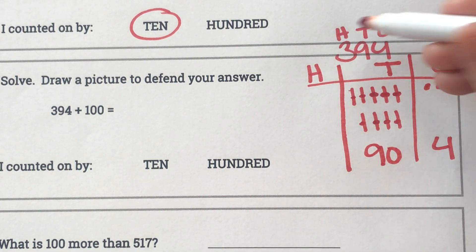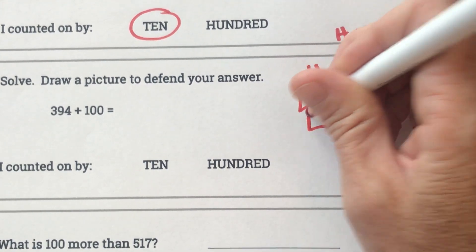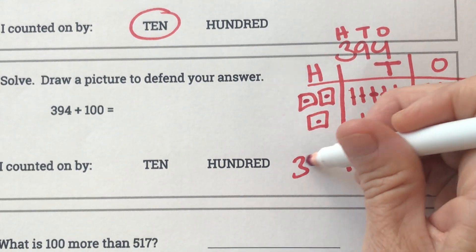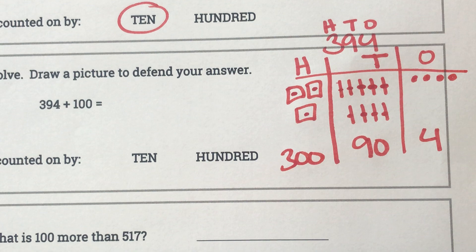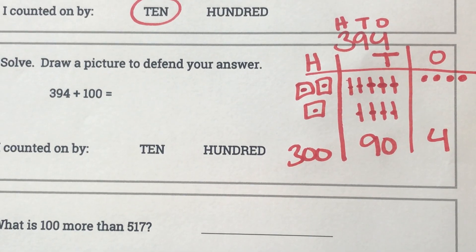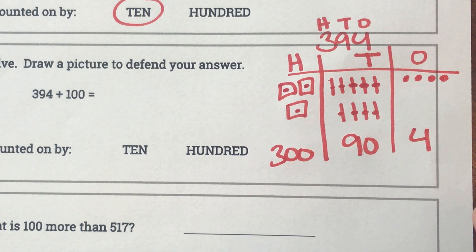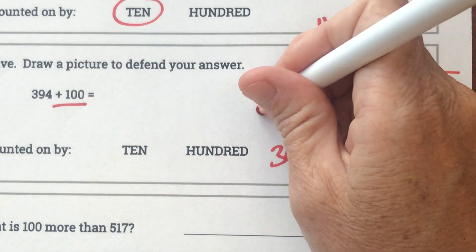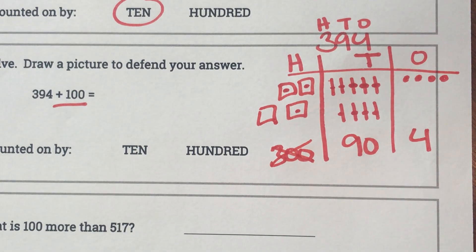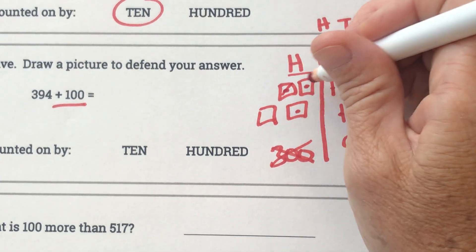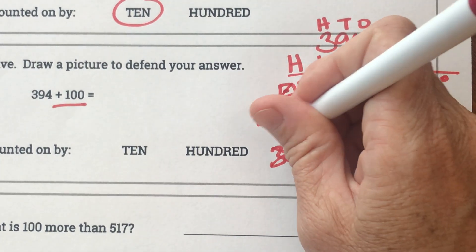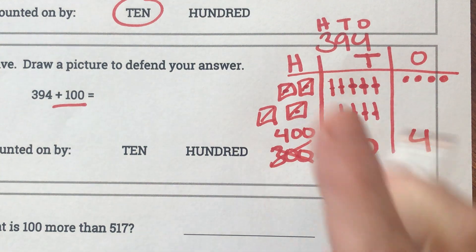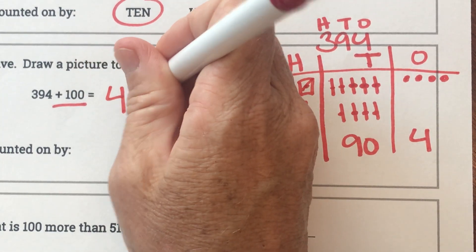And I have three 100's — 100, 200, 300. So this is what 394 looks like using base 10 blocks. But the question says to add another 100. If I add another 100, I don't have 300 anymore — I have 100, 200, 300, 400. So my new answer is 494.